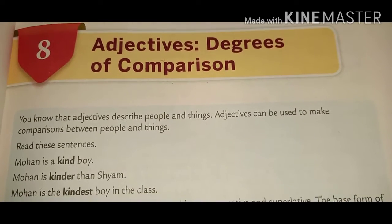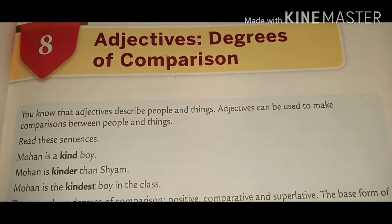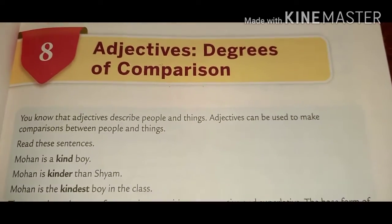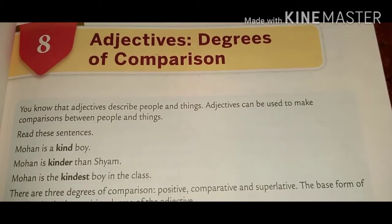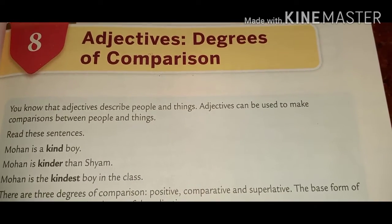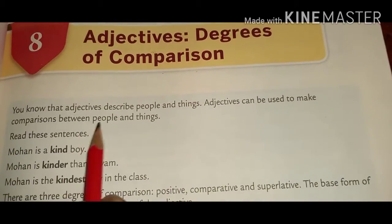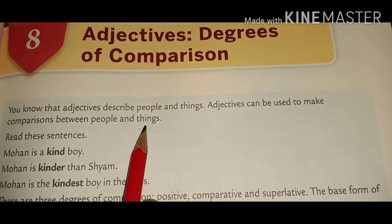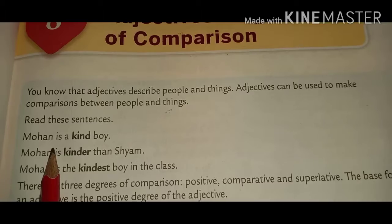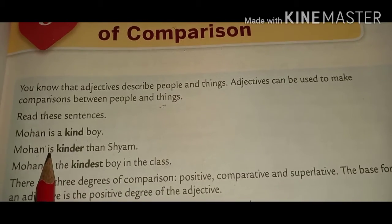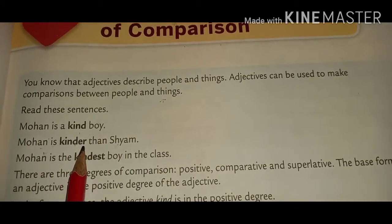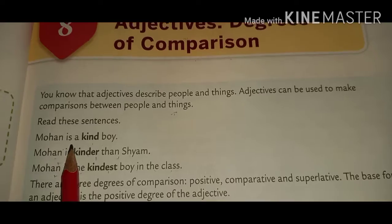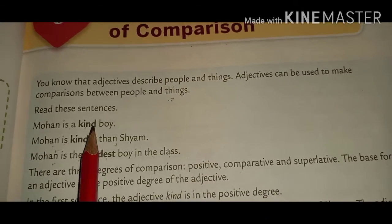We compare adjectives as nouns in certain ways — positive, comparative, and superlative. You know that adjectives describe people, nouns, and things. Adjectives can be used to make comparisons between people and things. For example, 'Mohan is a kind boy.' 'Mohan is a kinder boy in the class.' So there are three ways in which we can describe and compare the adjective.